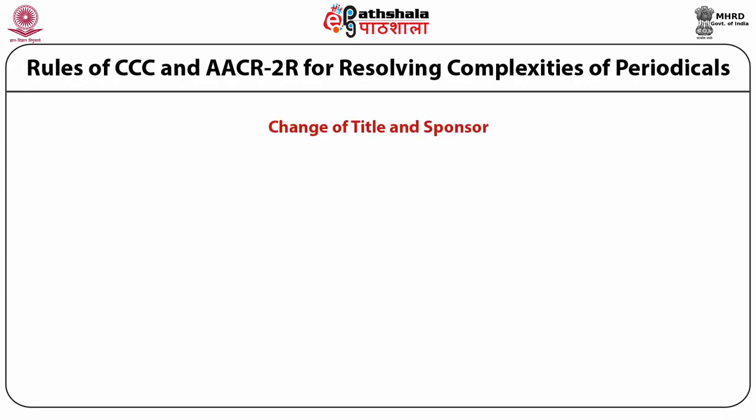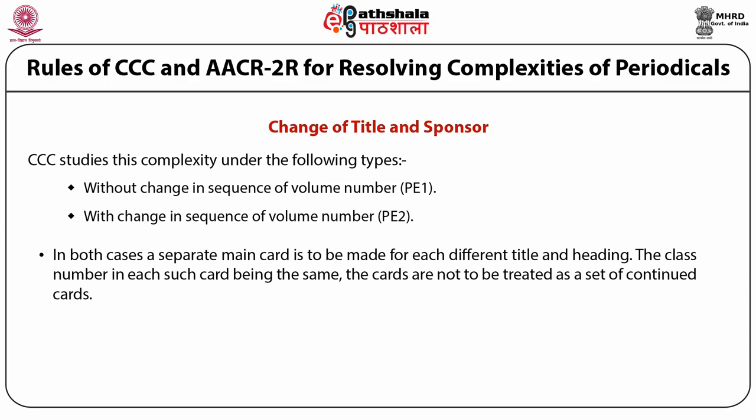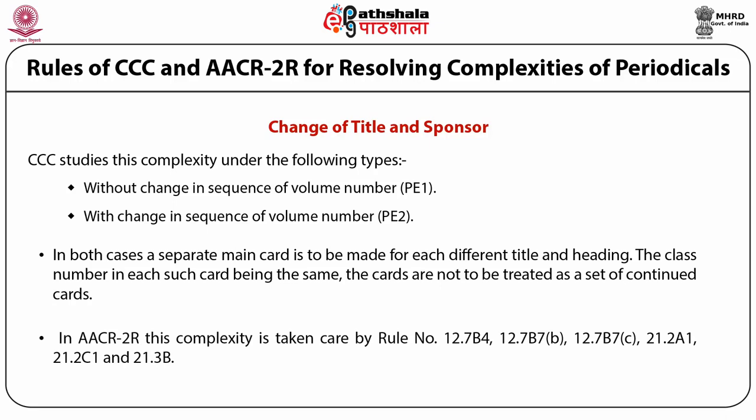Change of title and sponsor. CCC studies this complexity under the following types: without change in sequence of number under Rule Pe1; with change in sequence of volume number under Rule Pe2. In the latter case, a separate main card is to be made for each title and heading. The cards are not to be treated as a set. In AACR2R, this complexity is taken care of by Rule Numbers 12.2.A1, 21.2.C1, and 21.3.V, and Rule Number 12.7.B4 — variation in the title: make notes on titles borne by the title proper; optionally give a romanization of the title.